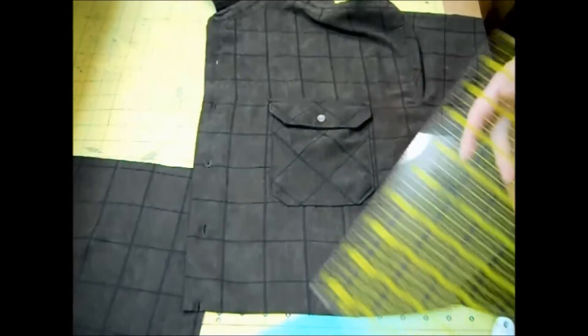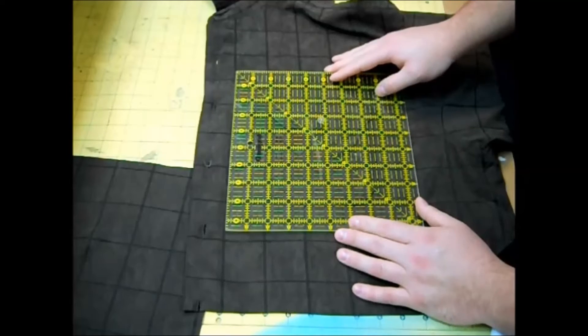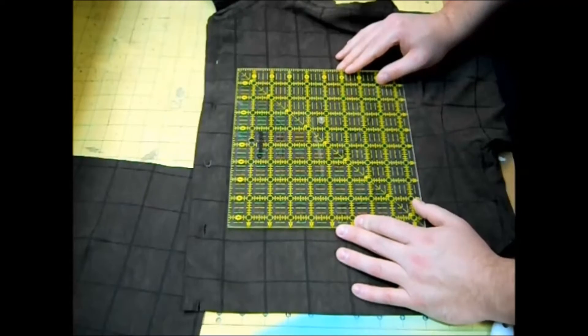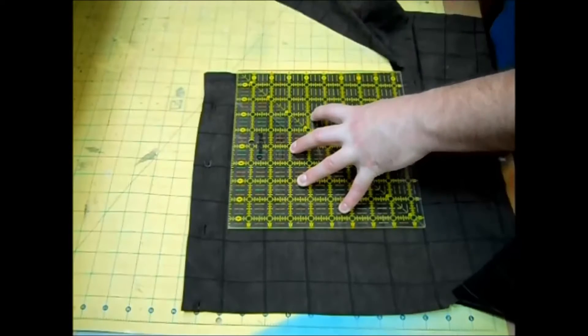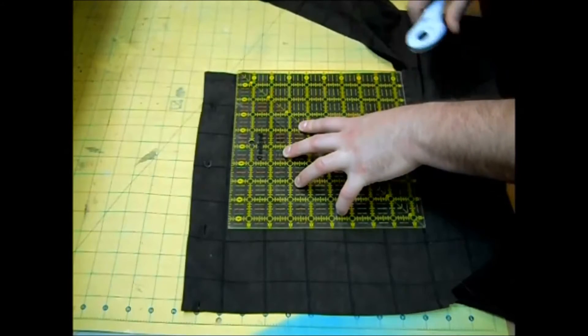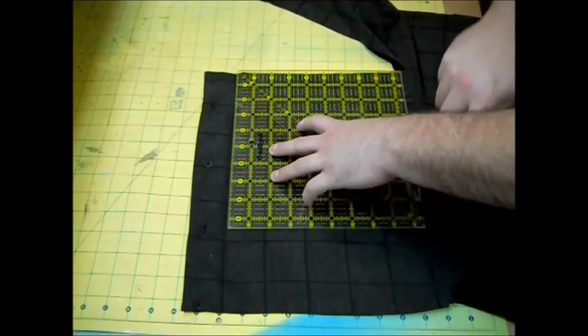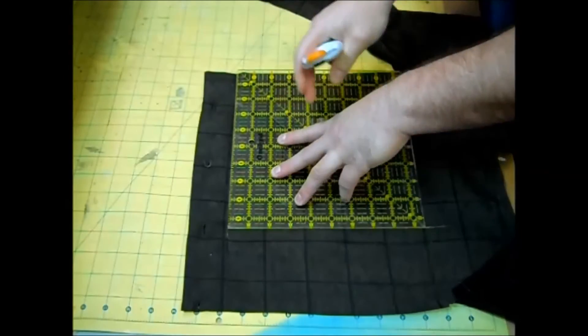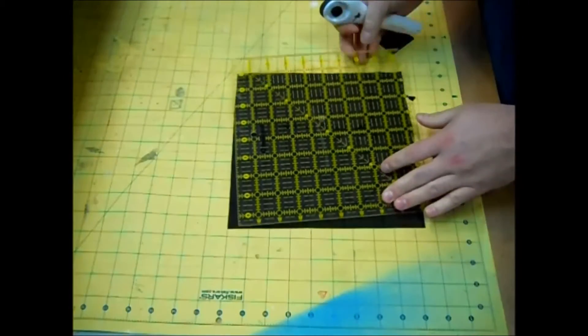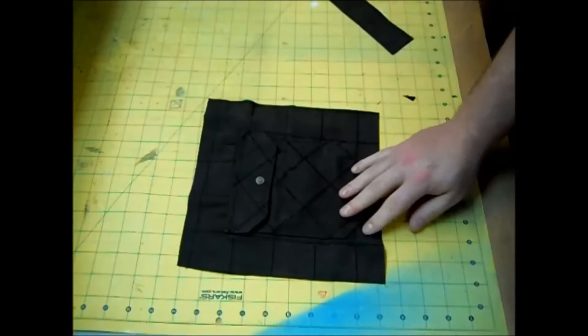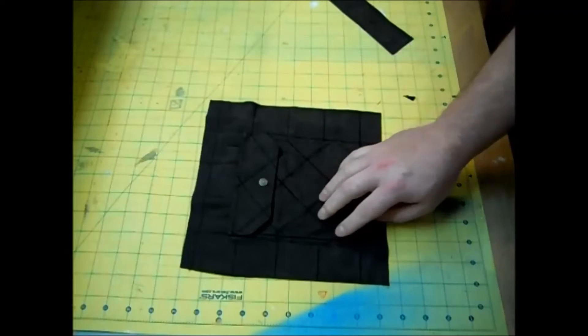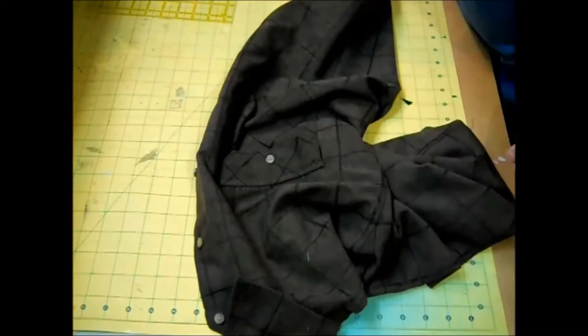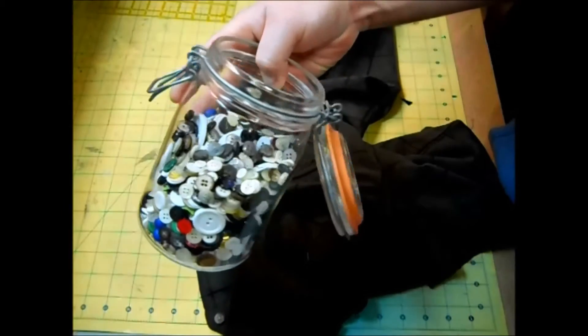Then I could also cut out this pocket if I wanted to and use it as an accent square. And I just might go ahead and do that. Now this will put a little dimension into your quilt and people will also know that it's recycled, upcycled, and made from shirts. I like that. And don't forget to get your buttons off here when you're done. I have a huge jar here full of buttons that maybe someday I'll use.